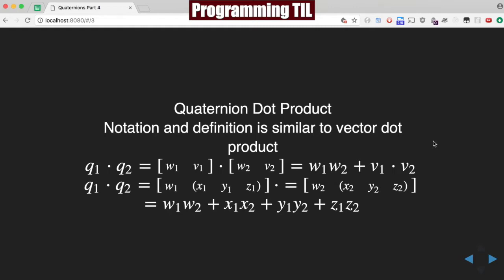The dot product is very similar to the vector dot product. So if we have q1 dot q2, in the shorthand version we'll have w1 v1 dot w2 v2, and then we'll just have the answer as w1w2 plus v1 dot v2.